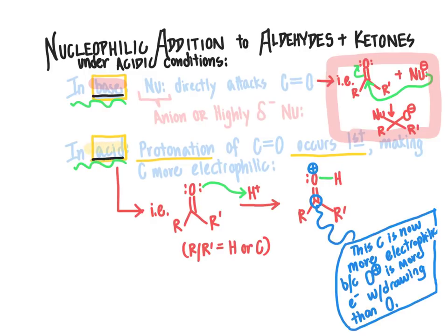In acid, one thing we've learned is that protonation is the first step of reaction mechanisms, and that holds true here as well. Under acidic conditions, if we have acid present, the first thing that happens is we can use the lone pair of electrons from our carbonyl group to attack the proton. The product of this reaction has a carbon that is now much more electrophilic than the starting carbonyl carbon, because the oxygen atom bonded there is now a cation — an oxygen cation is very electron-withdrawing, much more so than oxygen with no formal charge.